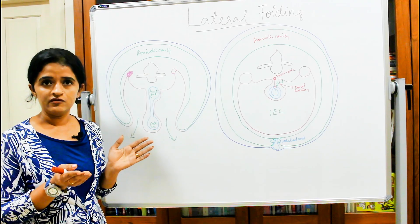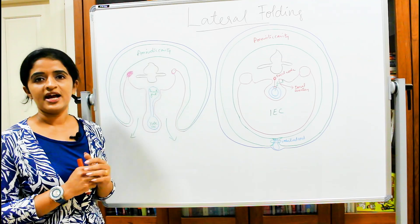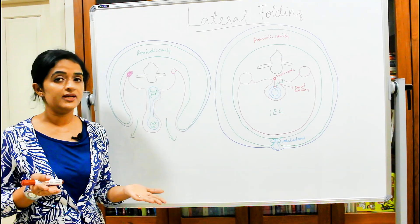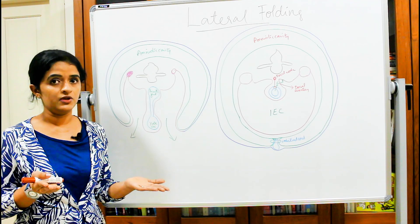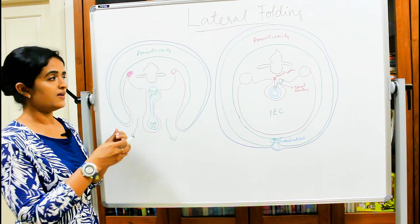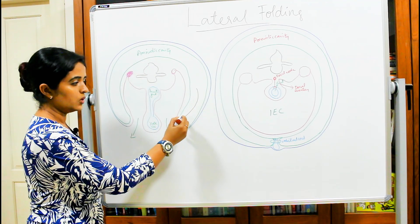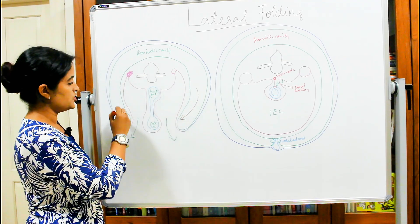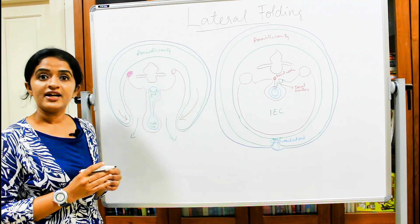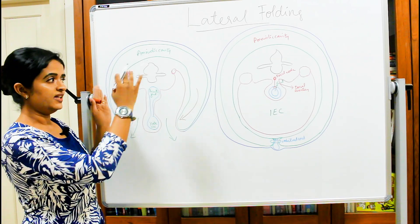Simultaneously with head folding and tail folding, there is another folding occurring laterally, known as lateral folding. On either side of the embryo — right and left — there is a folding so that the amniotic cavity is also pushing towards the midline. That is what is meant by lateral folding.